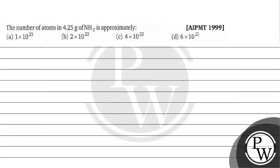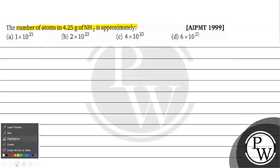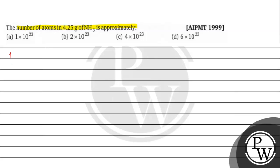Let's read this question. The question says: number of atoms in 4.25 grams of ammonia is — option A: 1 × 10^23, option B: 2 × 10^23, option C: 4 × 10^23, option D: 6 × 10^23.